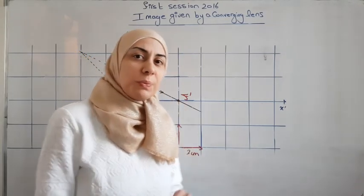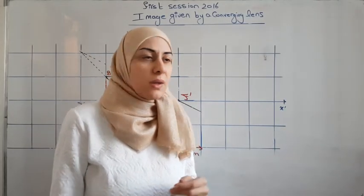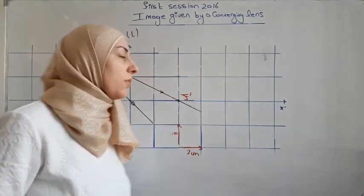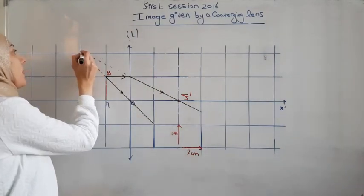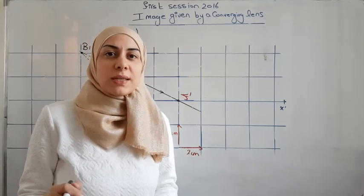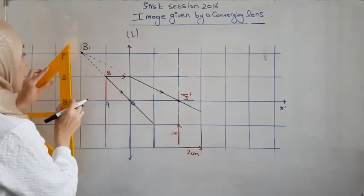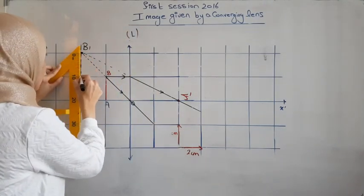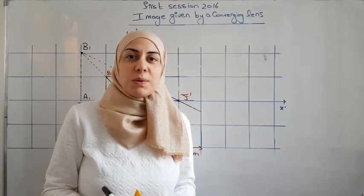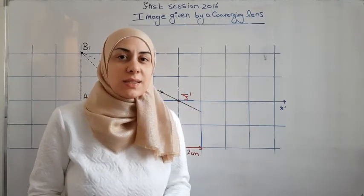When we prolongate the two rays, we draw them dotted because there is no actual ray of light there. The intersection of the two prolongated rays gives us image point B1 of object point B. We then draw the perpendicular to the optical axis to obtain image A1 of A. We also draw image A1B1 dotted because it is virtual — it is behind the lens and not real.